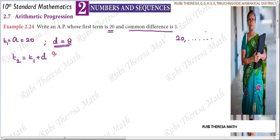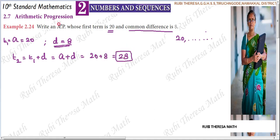T1 is nothing but A. So T2 equals A plus D. The preceding term is 20, so 20 plus 8 equals 28. So the second term is 28.